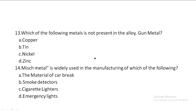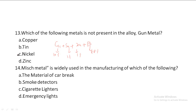Next one: Which of the following metals is not present in the alloy Gun metal? Option A: Copper, Option B: Tin, Option C: Nickel, Option D: Zinc. Gun metal composition is Copper plus Tin plus Zinc plus Lead. Nickel is not present in gun metal. Option C, Nickel, is the correct answer.